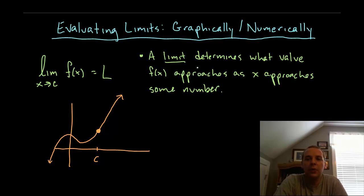A limit determines what value a function approaches as the x values get closer to some number. The notation is written like this: we write lim x arrow to C, which stands for the limit as the x's approach C for a function f of x, and that limit will be equal, typically we write the letter L, some number which stands for the limit.